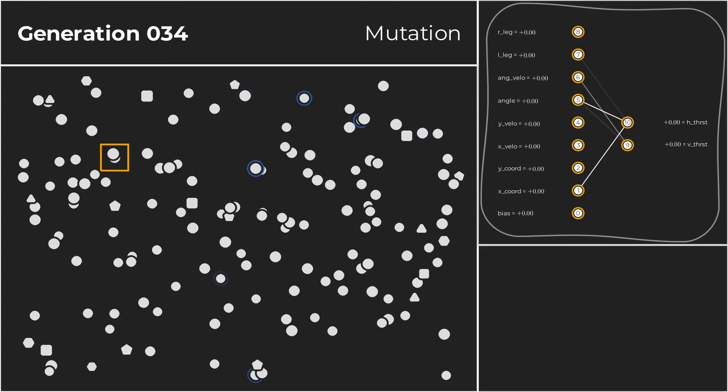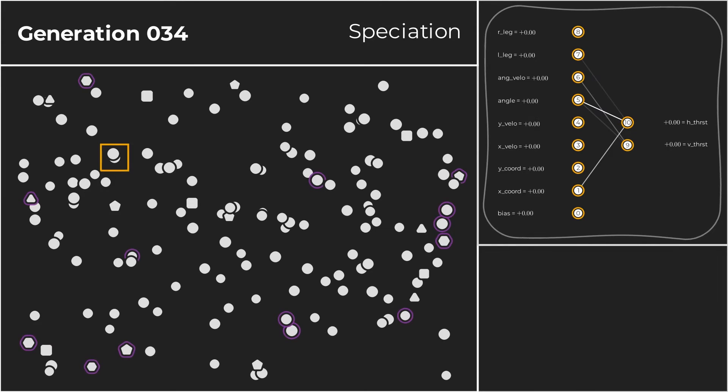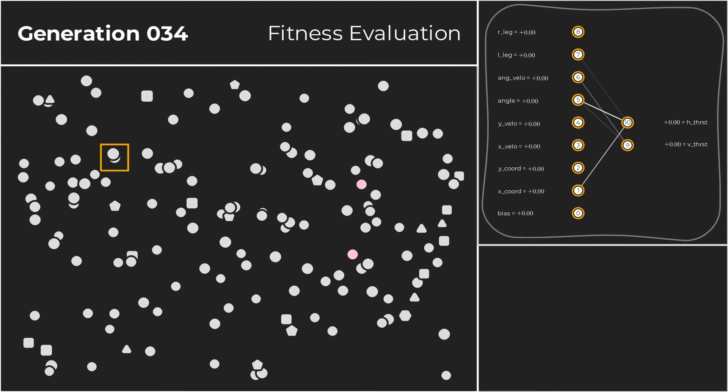By now the individual has a total of five connection genes. Its strongest edge has a weight of 11.32 and connects the angle of the aircraft to its horizontal thrust. That indicates that the network has learned to balance itself out, by applying thrust in the opposite direction of its tilt. The remaining connections are not as strong, but seem to be quite useful nonetheless. One of them links the position on the X-axis to the horizontal thrust, effectively allowing the aircraft to steer left and right. Other connections are a bit more dubious. For example, the one connecting the left leg of the aircraft to its horizontal thrust. Luckily, its weight is close to zero, so it doesn't have much of an impact on the aircraft's behavior.